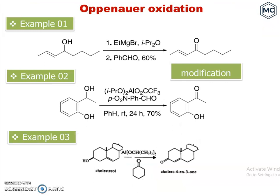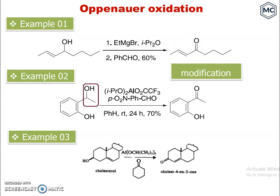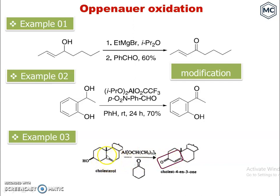Two examples show modified Oppenauer oxidation. In the first case, an allylic alcohol — an alcohol with an unsaturated bond — is converted into a ketone. In the second example, a secondary alcohol attached to an aromatic ring is converted into a ketone. In the third example involving cholesterol, the secondary alcohol is converted into a ketone, while the double bond undergoes rearrangement to form a new double bond conjugated to the carbonyl.